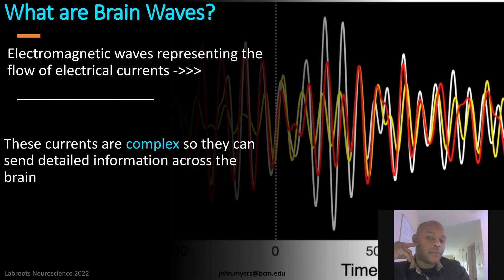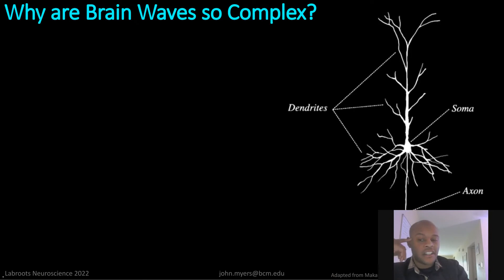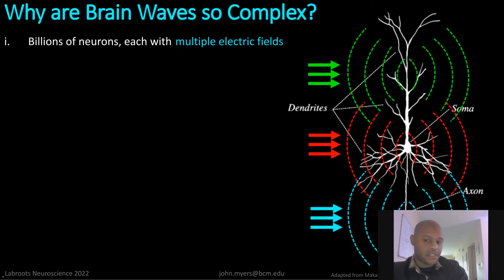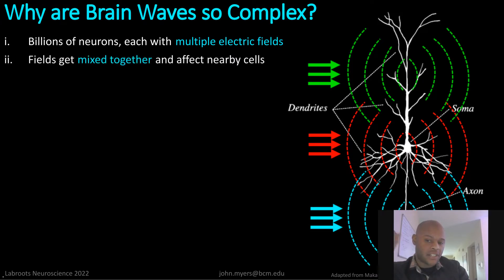But why are brainwaves so complex? There are billions of neurons, and each one has multiple electrical fields at the sites of the synapses. You probably already know that neurons are connected to each other via synapses, and at each one of these locations, an electrical field is generated.